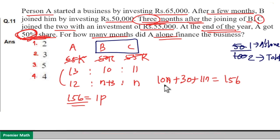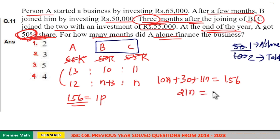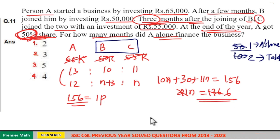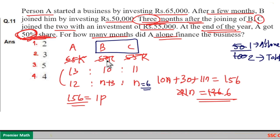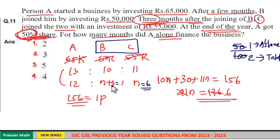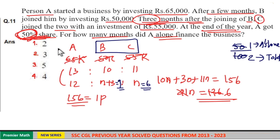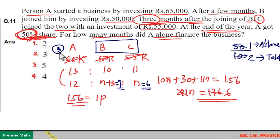So 11N + 10N = 21N, and 21N = 156 − 30 = 126. Since 21 goes 6 times into 126, N = 6. This means C invested for 6 months, B invested for 6 + 3 = 9 months, which means A alone invested for 3 months. So option 2 is the answer.